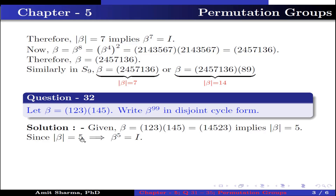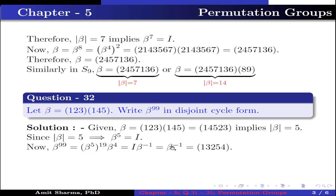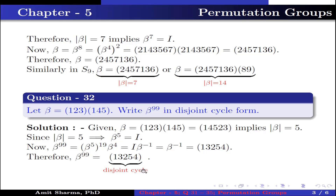Since the order of beta is 5, beta^5 is identity. Now beta^99 can be written as (beta^5)^19 times beta^4, which simplifies to identity times beta^(-1) (since beta^5 is identity and 99 = 95 + 4 = 5×19 + 4). Multiplying, we get beta inverse, which is written as (1, 3, 2, 5, 4) — just write the permutation in reverse order. Therefore, beta^99 is the permutation (1, 3, 2, 5, 4) in disjoint cycle form.